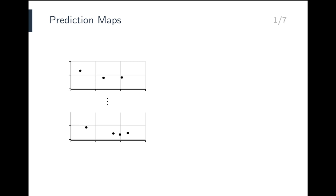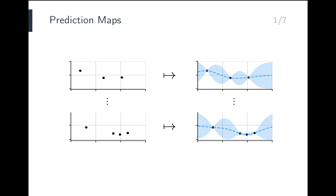The setting of neural processes is meta-learning, where there are many datasets, often small, and we wish to make a prediction for every one of them. We can view prediction as a mapping, where the input is a dataset — a collection of input-output pairs — and the output is a probability distribution, for example means and variances at test inputs. We call maps of this form prediction maps, and denote the typical instance by pi.